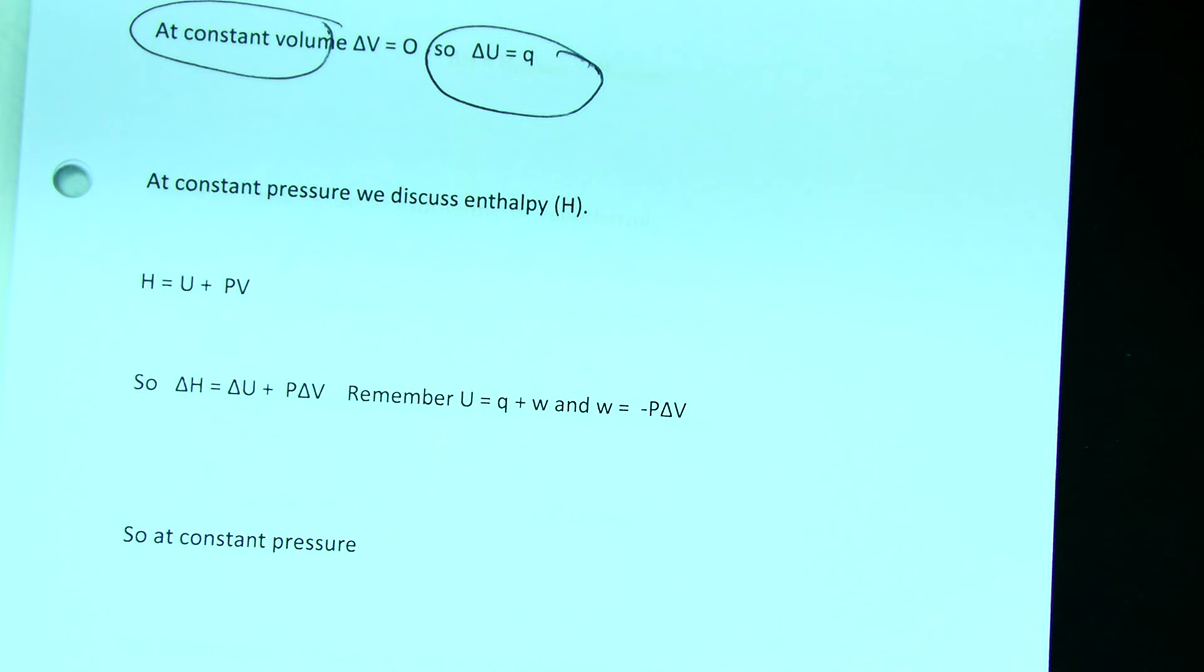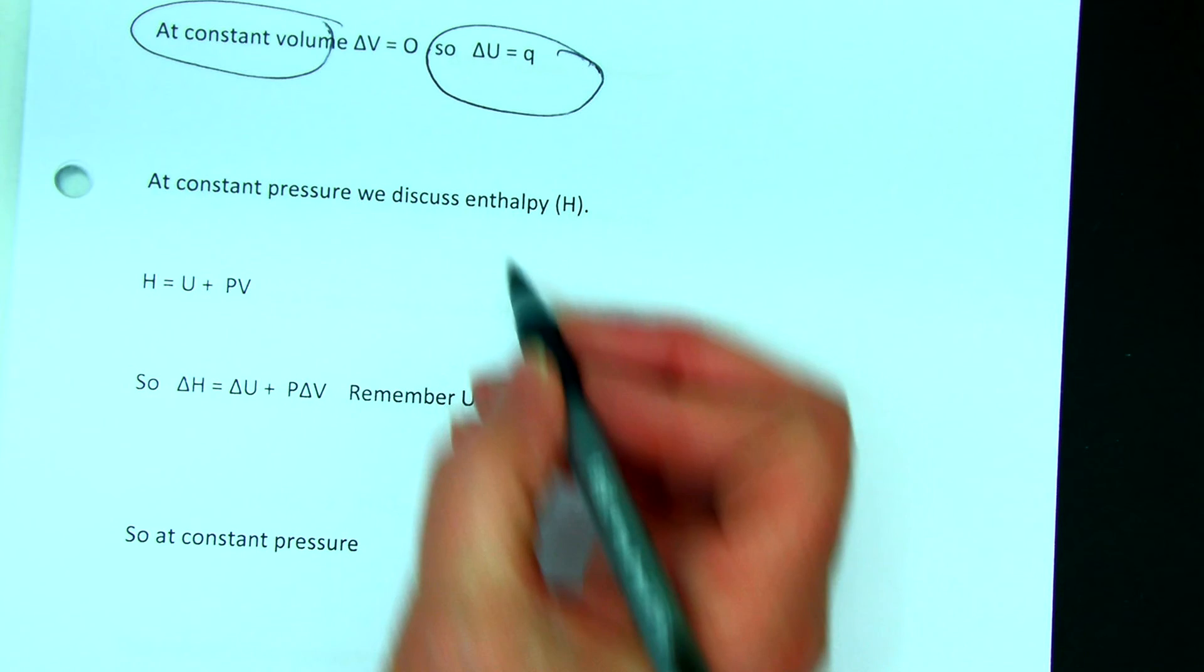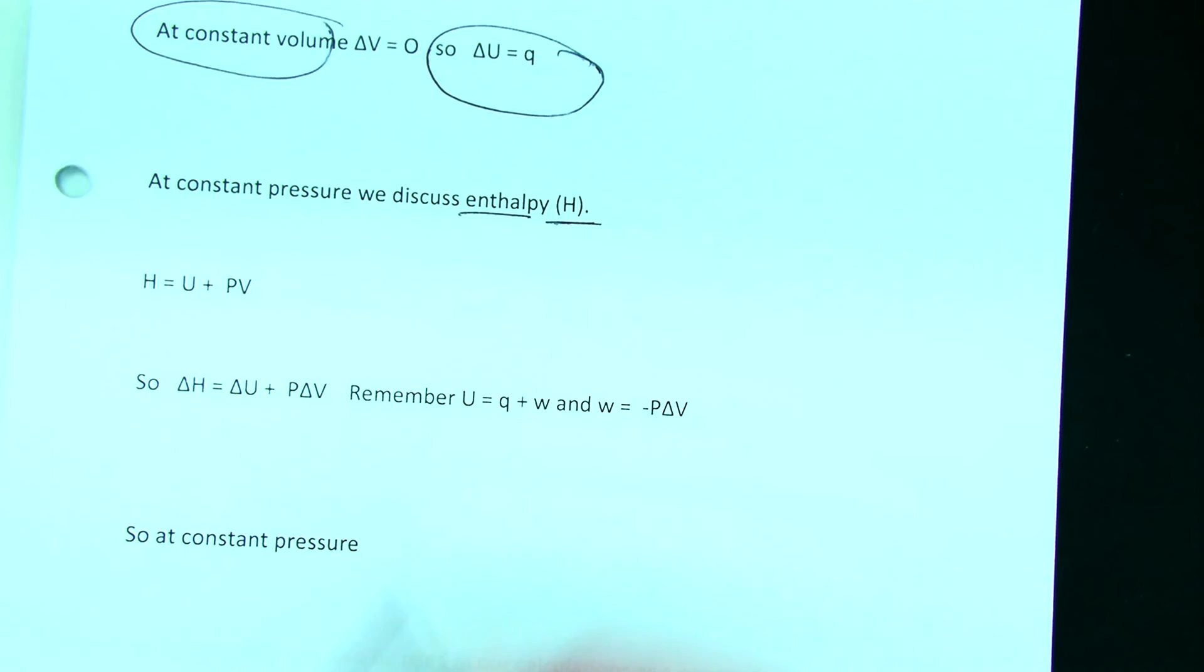If instead of constant volume, sealing things in a container, we discuss a system at constant pressure, which is more common for us in chemistry because we're at atmospheric pressure, we talk about enthalpy and we use the letter uppercase H to describe enthalpy.